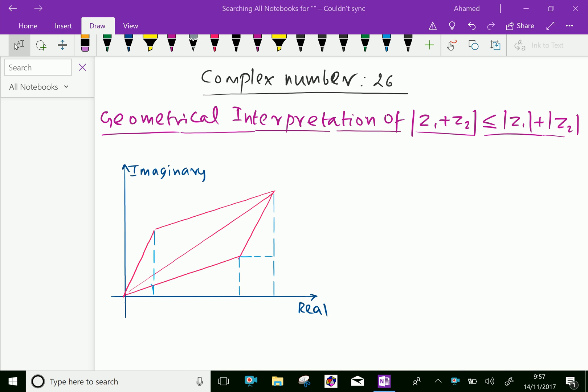Welcome to AminAcademy.com. In complex numbers, let us discuss the geometrical interpretation of |z₁ + z₂| ≤ |z₁| + |z₂|.